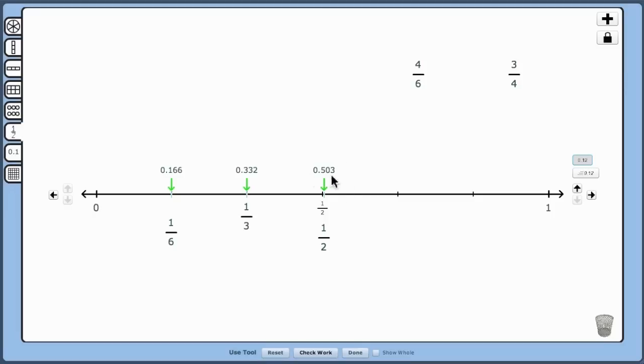If we want to see the decimal number as the fraction is being dragged along the number line, click the decimal action button. Now, as I drag the fraction, you'll notice that the decimal is shown above the line.